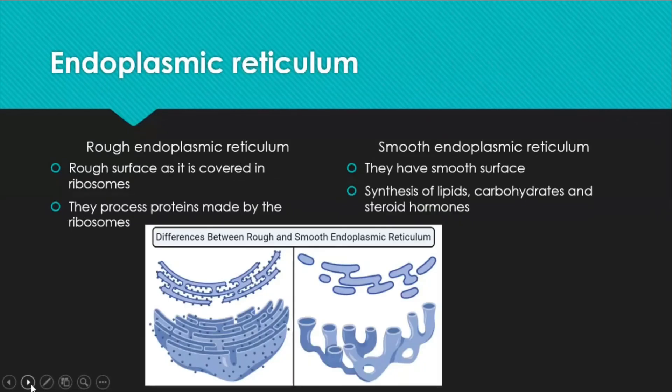Endoplasmic reticulum is of two types: rough endoplasmic reticulum (RER) and smooth endoplasmic reticulum (SER). As the name suggests, RER has a rough surface due to ribosomes on it. RER processes proteins produced by ribosomes — ribosomes are the protein factories of the cell. SER has a smooth surface and synthesizes carbohydrates, lipids, and steroid hormones, including testosterone and estrogen.